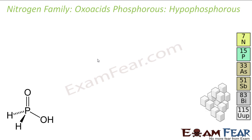The first one is hypophosphorus acid, which is H3PO2. In this case, the oxidation state of phosphorus is +1.